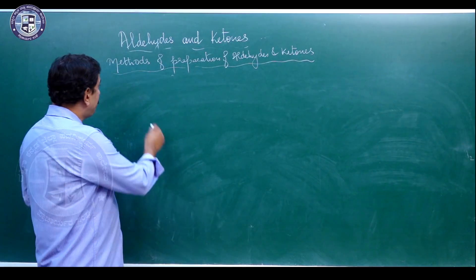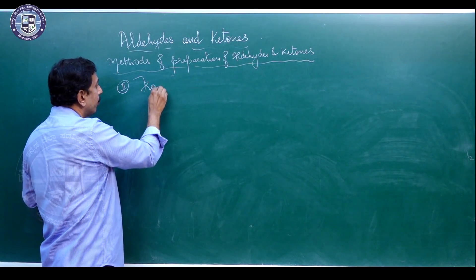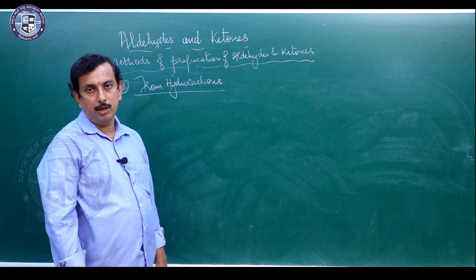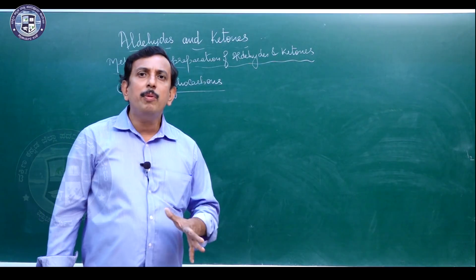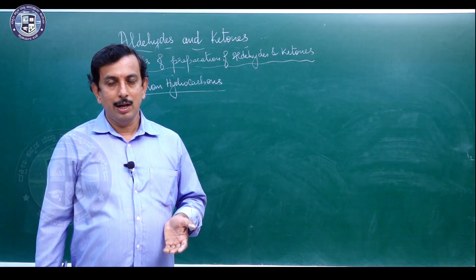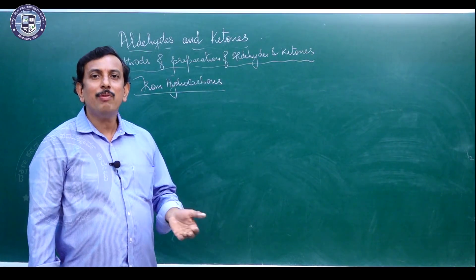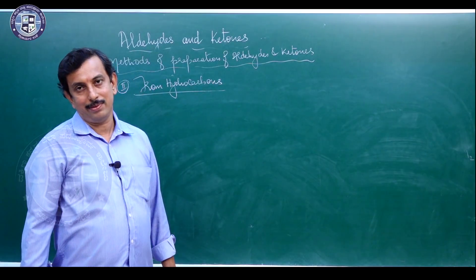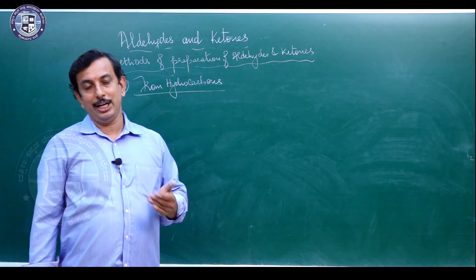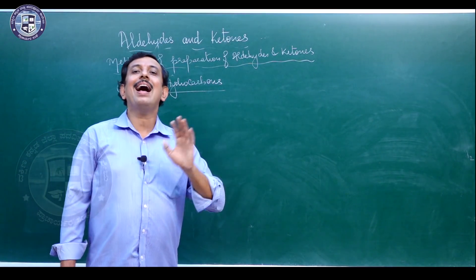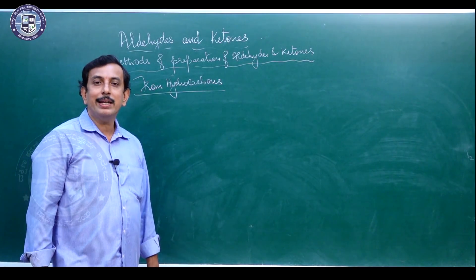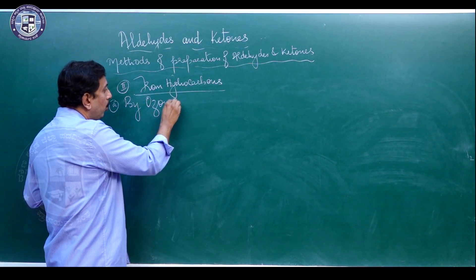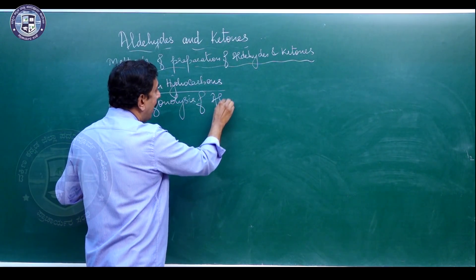The next method of preparation is from hydrocarbons — another important method of preparation of aldehydes and ketones. Among hydrocarbon varieties, we pick two: alkenes (olefins) and alkynes. The first route is by ozonolysis of alkenes.